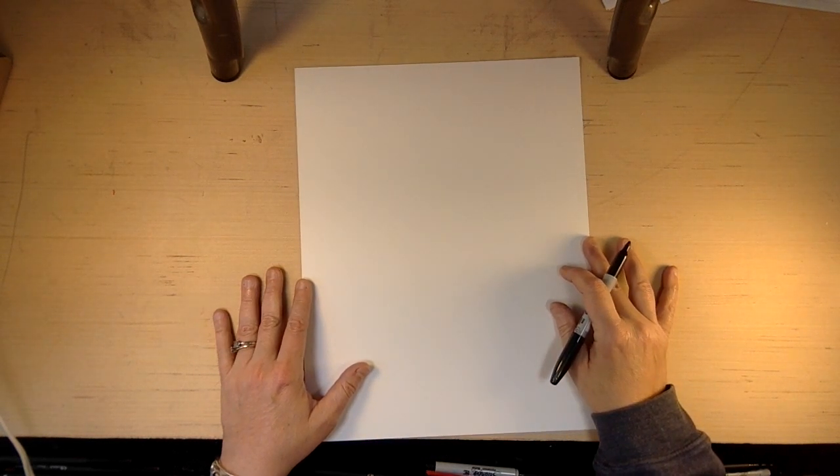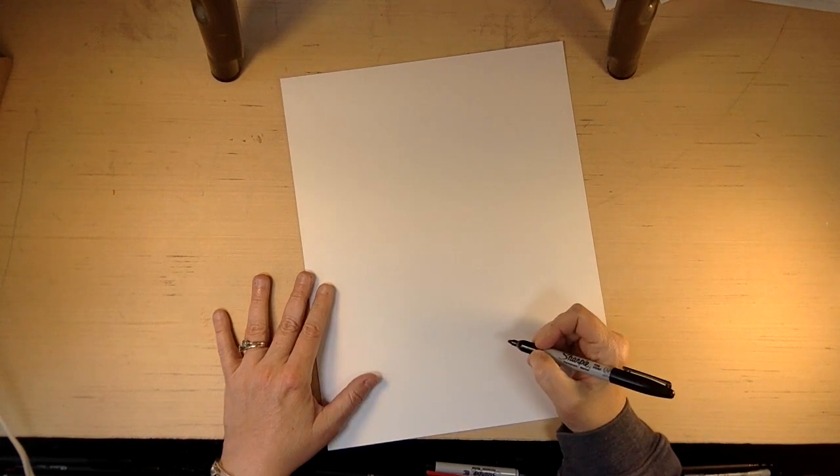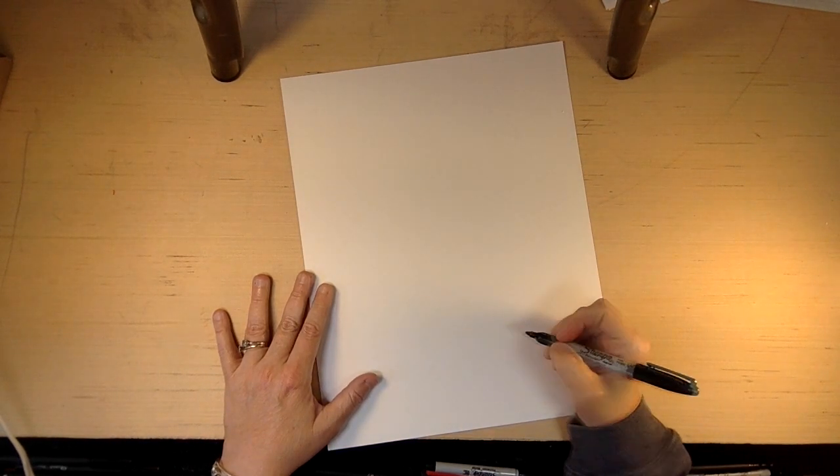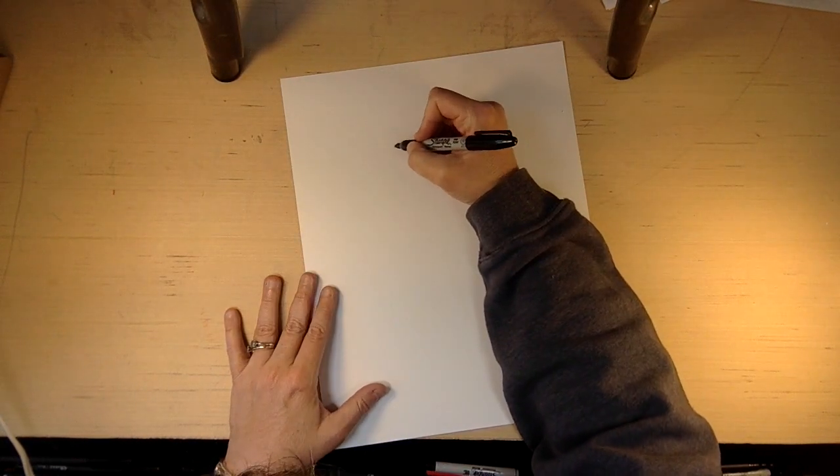So everyone grab your paper, and as you're drawing, think of your favorite ice cream, and what would it be? Mine is mint chip. I love it. Not only because it's green and a pretty color, but I love the flavor.